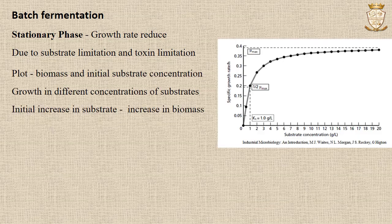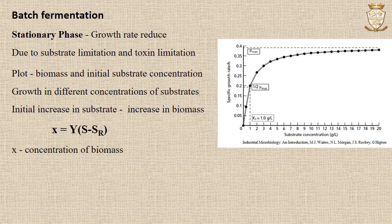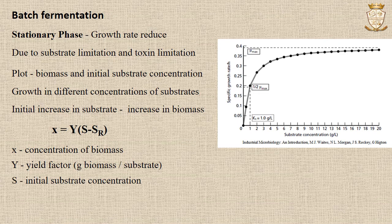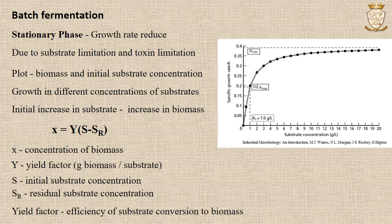The nature of limitation of growth can be studied by growing the organism in the presence of different concentrations of substrate and plotting the biomass concentration at stationary phase against the initial substrate concentration. From such a graph, as shown in the diagram, with an initial increase in substrate concentration, a proportional increase in biomass occurs. This is expressed as x = y(S - Sr), where x is the biomass concentration, y is the yield factor in grams of biomass per substrate consumed, S is the initial substrate concentration, and Sr is the residual substrate concentration. The yield factor y is a measure of the efficiency of substrate conversion into biomass.